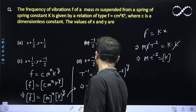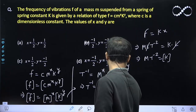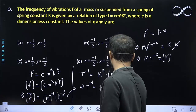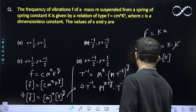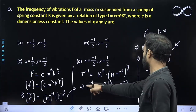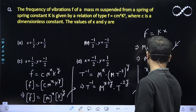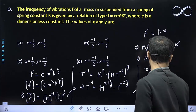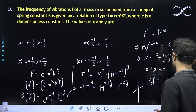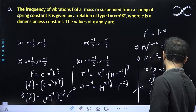From here, T raised to power minus 1 equals m raised to power x plus y times T raised to power minus 2y. Comparing both sides, x plus y must equal 0 because mass has dimension 0 on the left side. And minus 2y must equal minus 1, so y equals 1 upon 2. From relation 1, x must equal minus 1 upon 2.